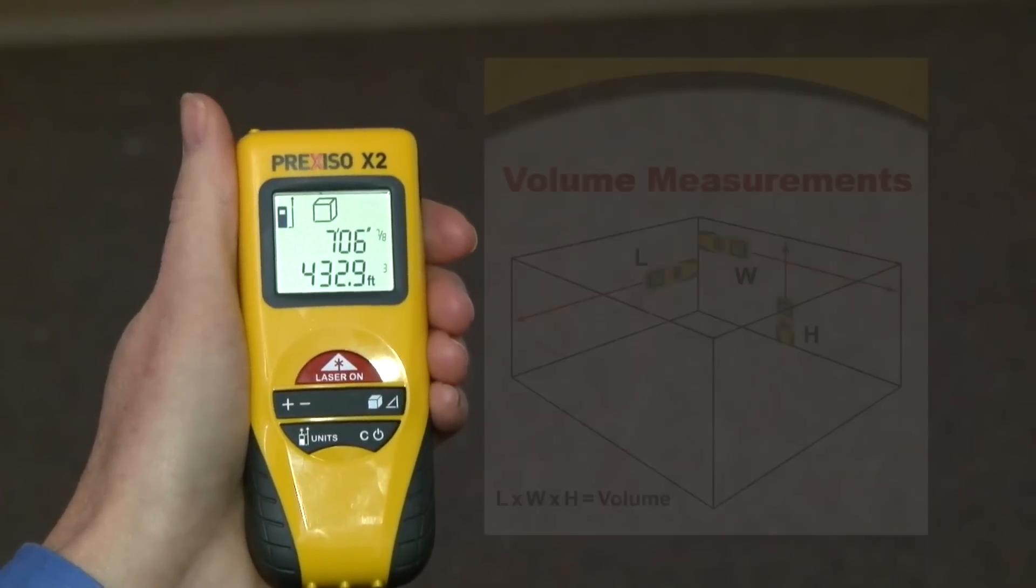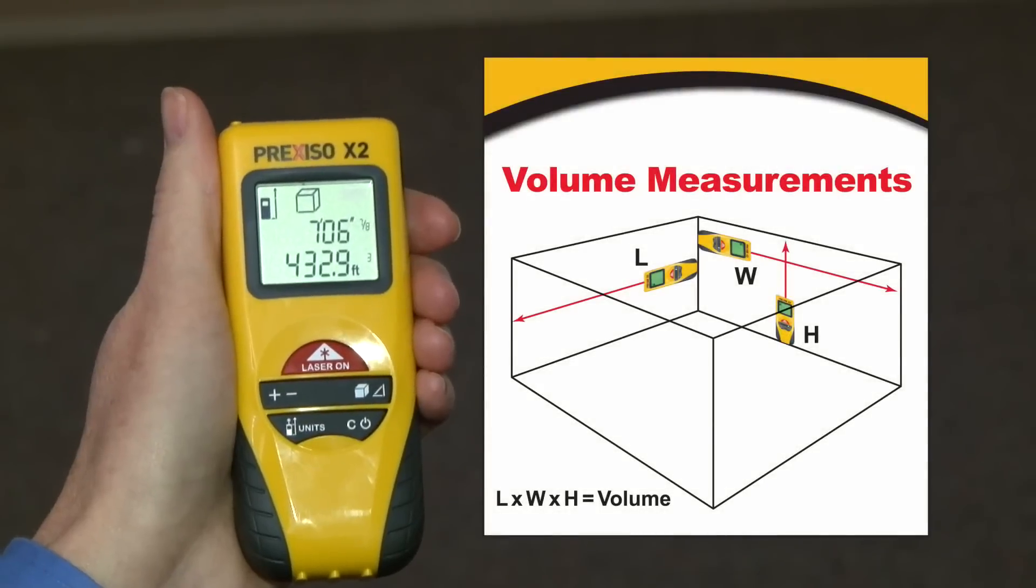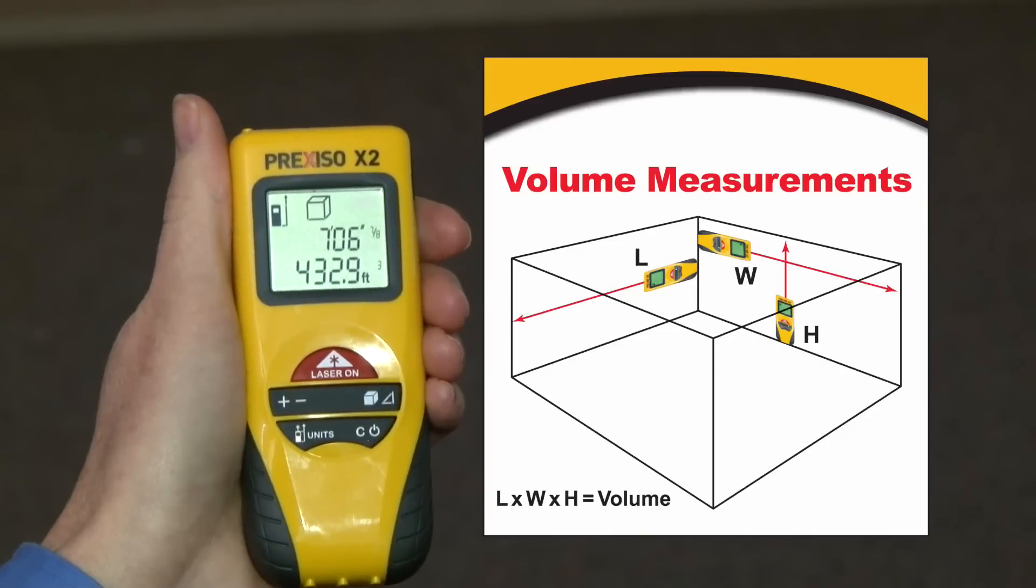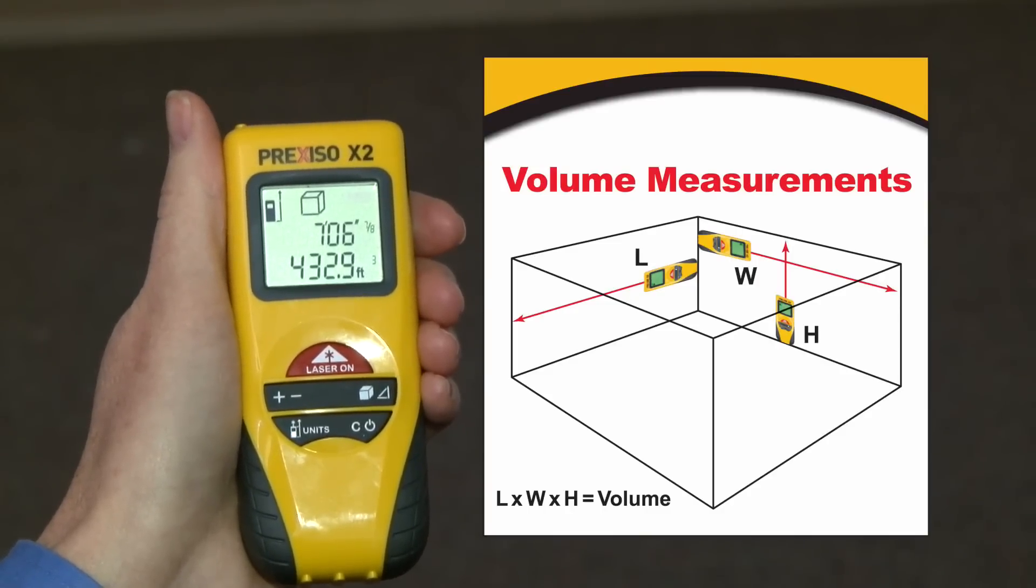And instantly the Prexiso X2 shows you the total cubic feet or total cubic meters you just measured. So that's a quick example of using the cubic volume measurement feature.